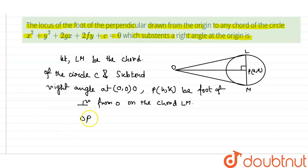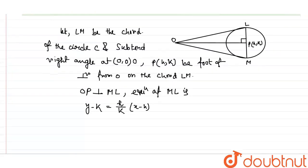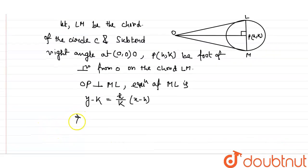As you can see that OP is perpendicular to ML. So the equation of ML is Y minus K equals negative H by K times X minus H. So after simplifying, what we have to get is H times X plus K times Y equals H square plus K square. That is equation 1.